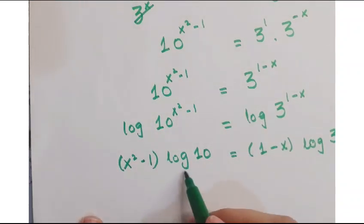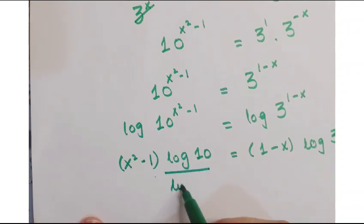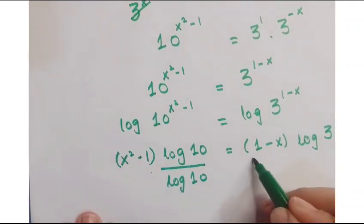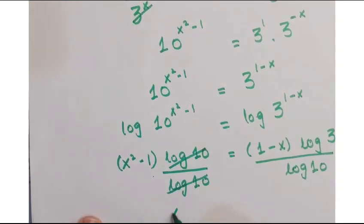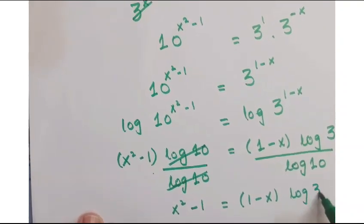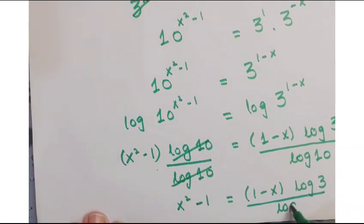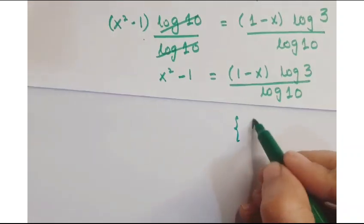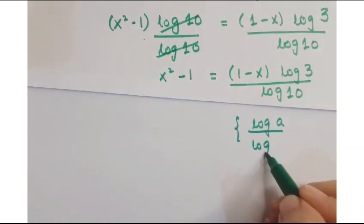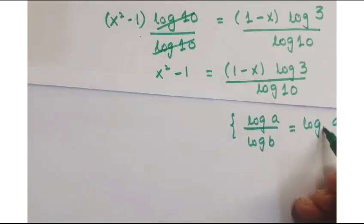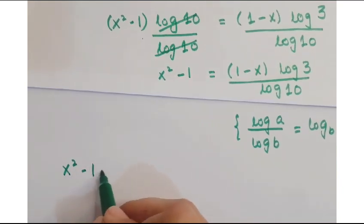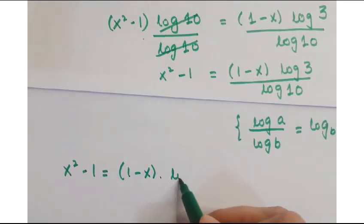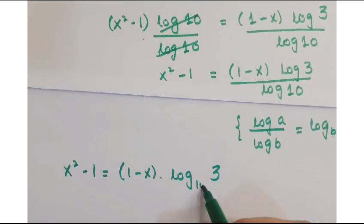Now, we have to eliminate log of 10. This log of 10 gets cancelled, so you get x squared minus 1 is equals to 1 minus x into log of 3 upon log of 10. As you know that log of a upon log of 10 is equals to log of a to the base b. So x squared minus 1 is equals to 1 minus x into log of 3 to the base 10.